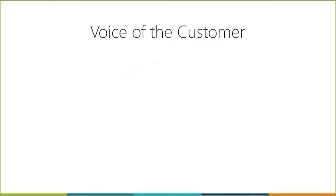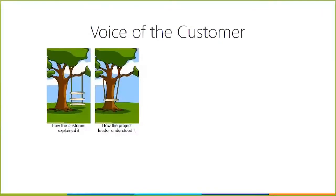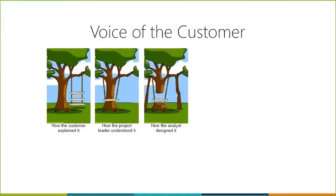Another part of design thinking is uncovering the voice of the customer. Oftentimes when we talk to our customers, they'll explain what they want in their own vocabulary. For example, a customer says "we want to have a swing in a tree with a few rungs on it." But the project leader or business partner hears literally "we want a swing in a tree" and starts trying to install one. Then a designer hears the same thing and decides they need to lift the tree to create space. A performance consultant imagines a lofty comfortable chair-swing in a tree.